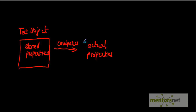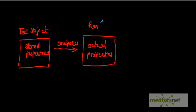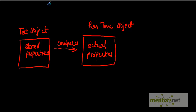During runtime, the actual objects available on the application under test are called runtime objects. QTP compares the test object with its runtime object, and whatever object is uniquely identified is treated as your target object. This is the QTP test object model.